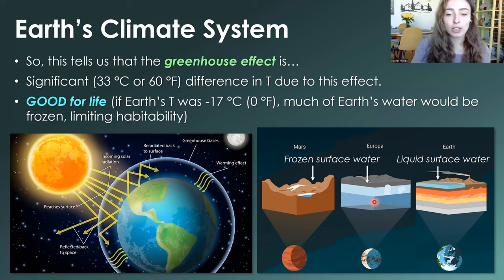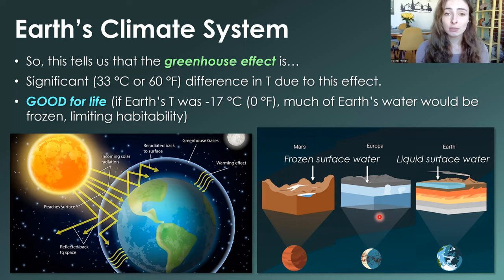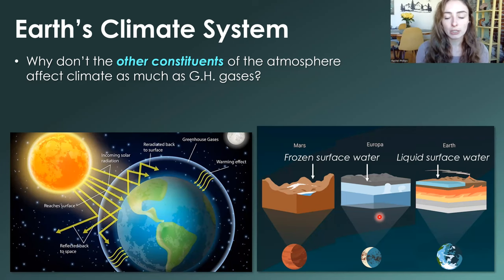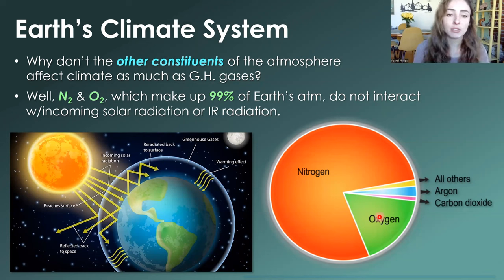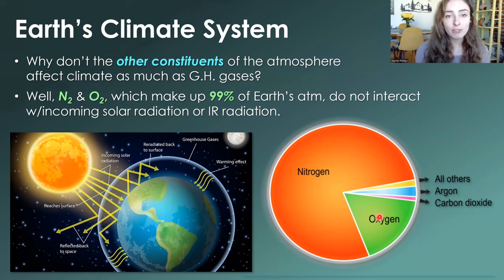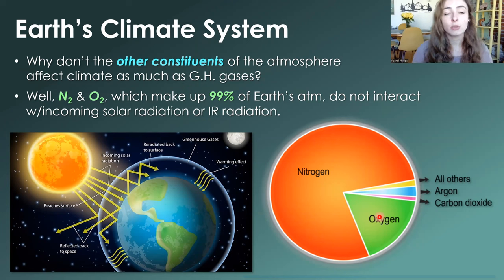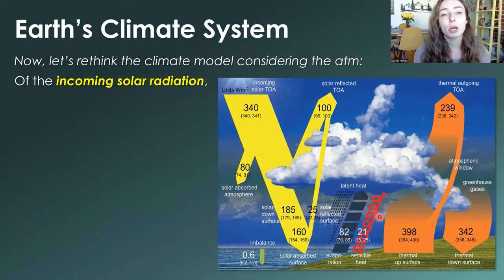We could see systems like Mars or Europa, where there's frozen water at the surface and a possibility of life, but life would be far greater if those systems had atmospheres and greenhouse effects strong enough to support liquid water at the surface. The major constituents of Earth's atmosphere — nitrogen and oxygen, which make up about 99% of Earth's modern atmosphere — do not actually interact with incoming solar radiation or outgoing IR radiation, which is why we focus on greenhouse gases when it comes to causing global temperature changes.